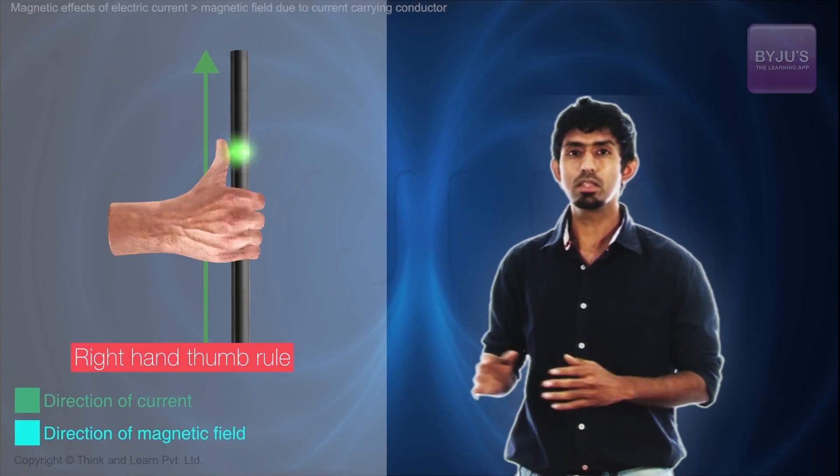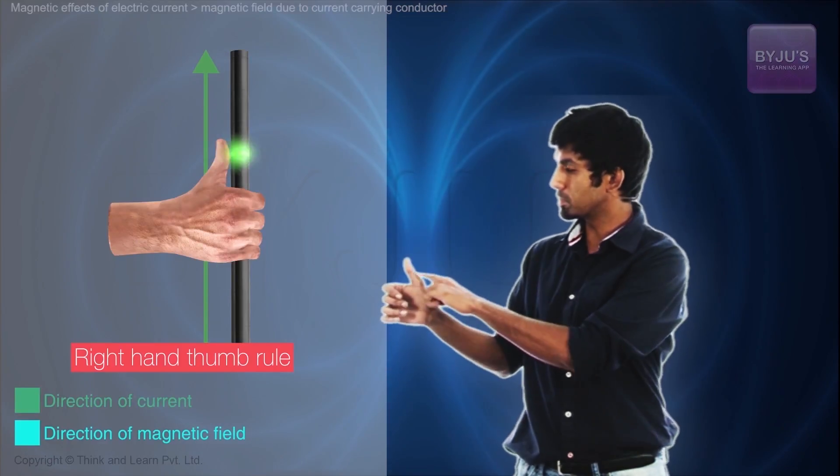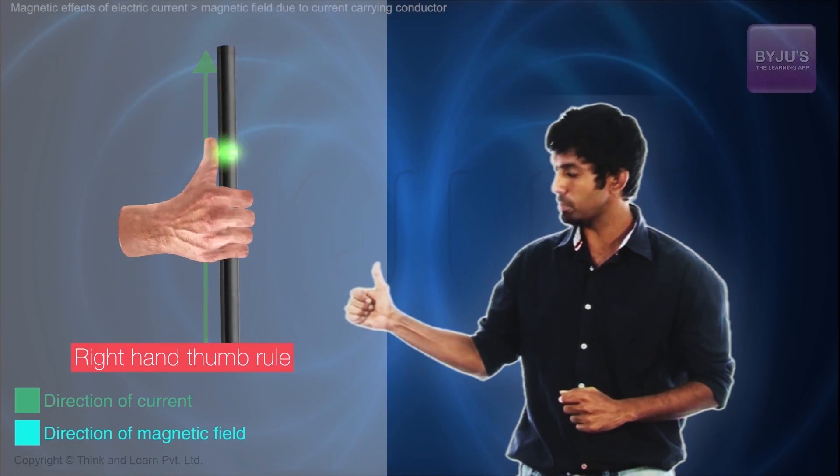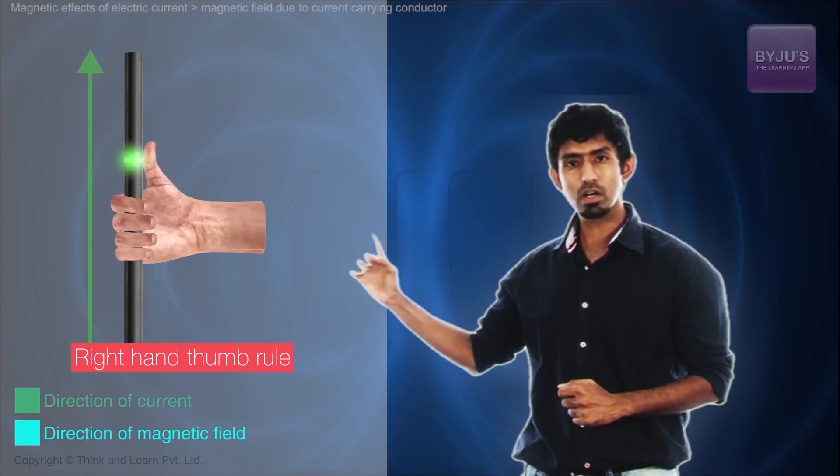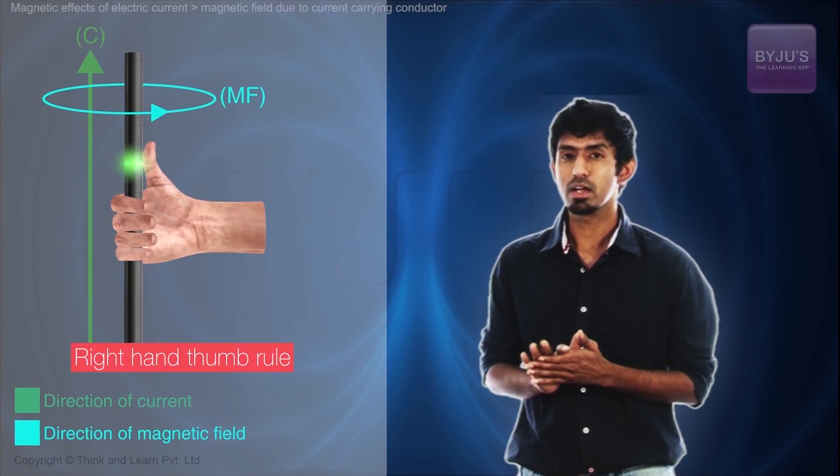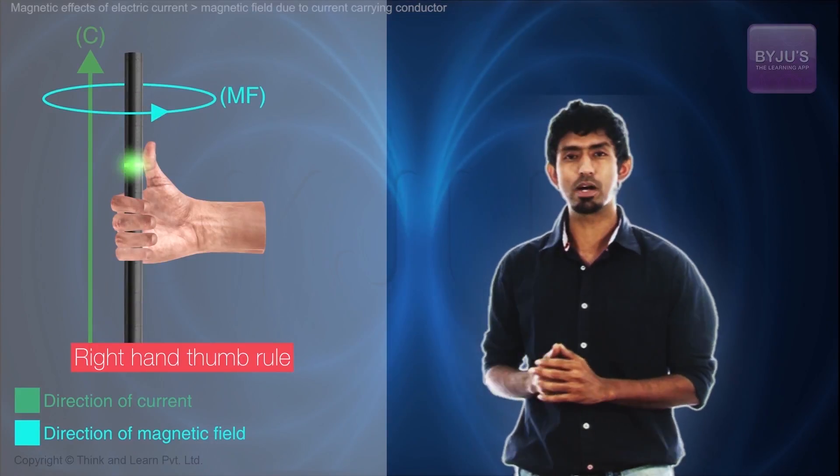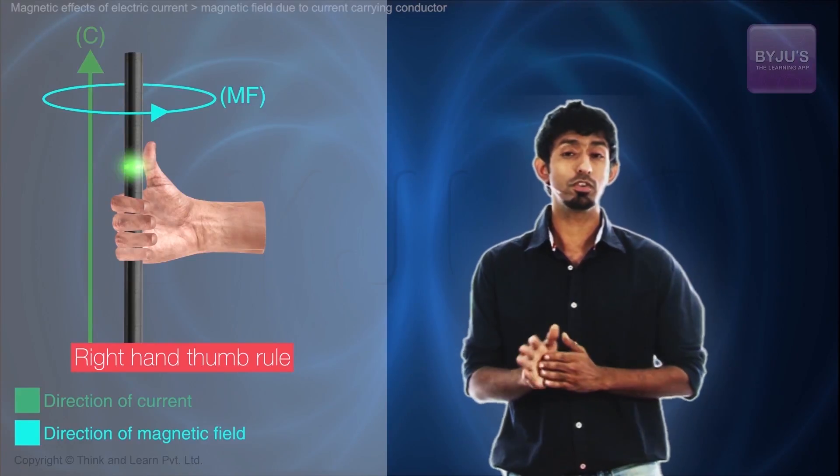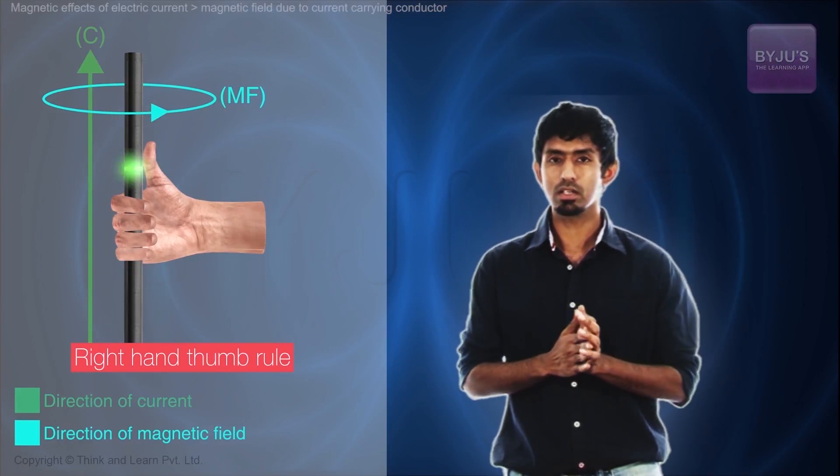Then if I point with my thumb to the direction of the current and if I curl my fingers, then the direction in which I curl my fingers gives me the direction of the magnetic field line. That's really useful, a very simple way to imagine a magnetic field because of a straight current carrying conductor.